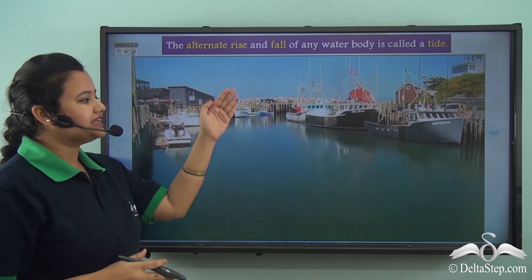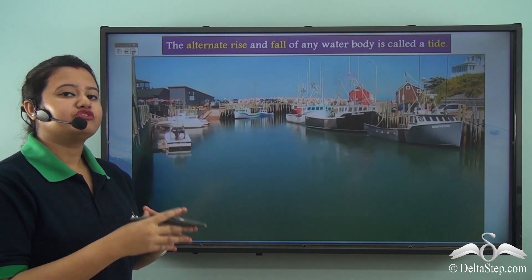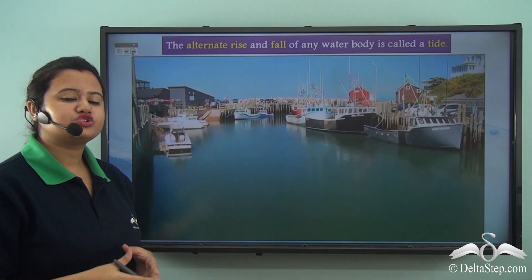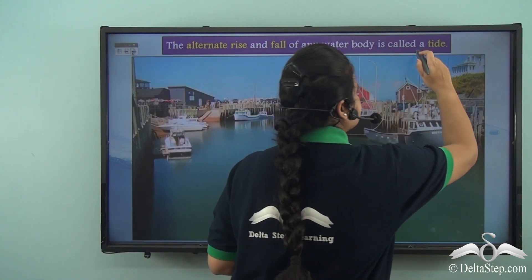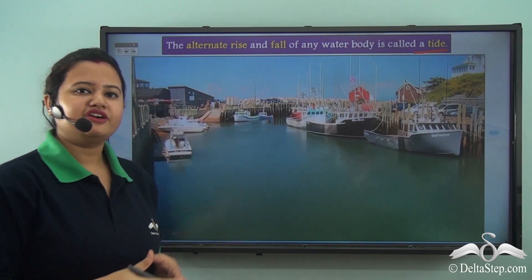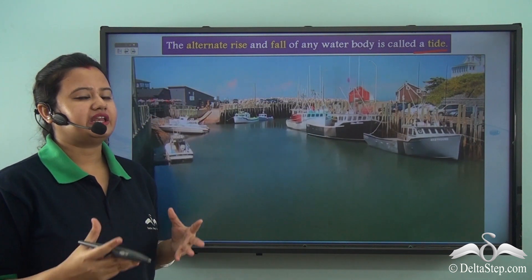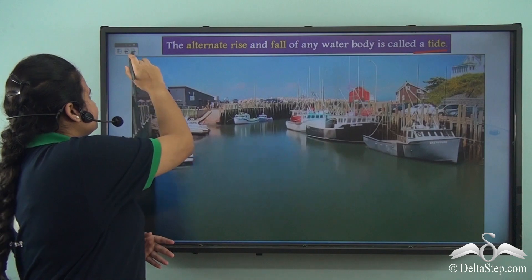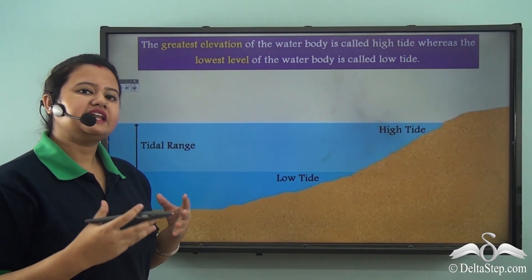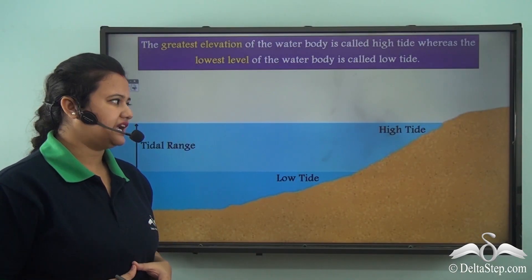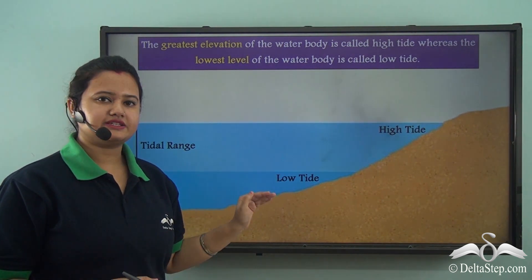The alternate rise and fall of any water body — for example seas, oceans, etc. — is known as tide. So tide simply refers to the ebb and flow of any water body. We observe that in the case of tide, the water level either rises or decreases.